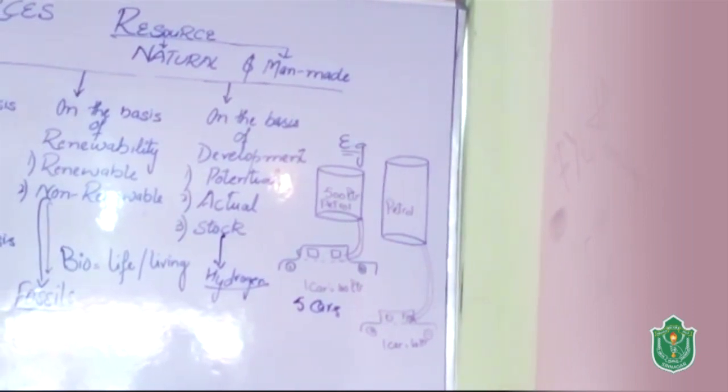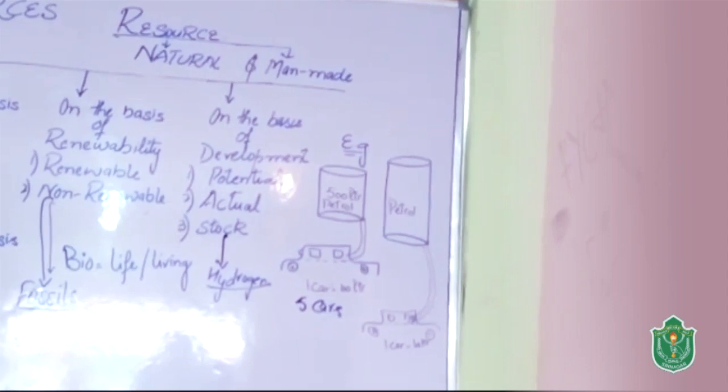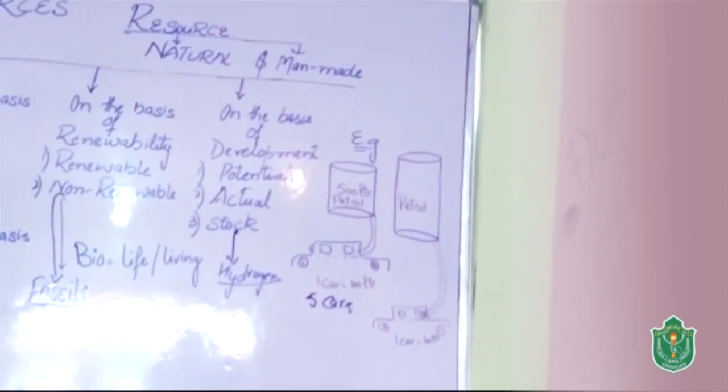Now, fourth stage, on the basis of availability. On the basis of availability, you have two kinds of resources: ubiquitous and localized.